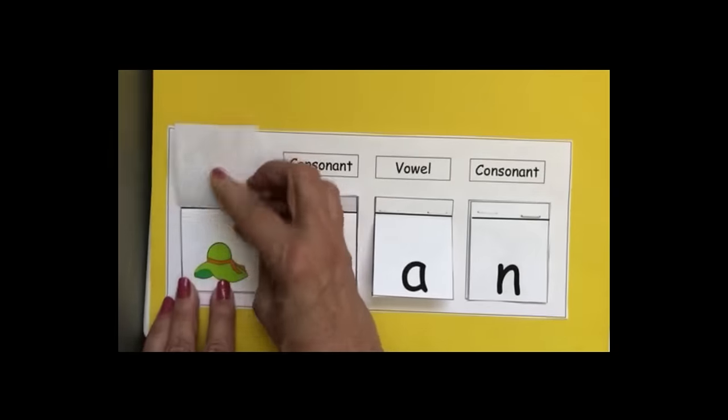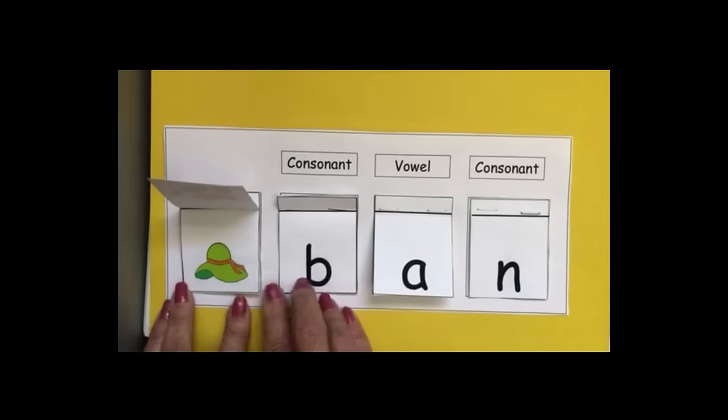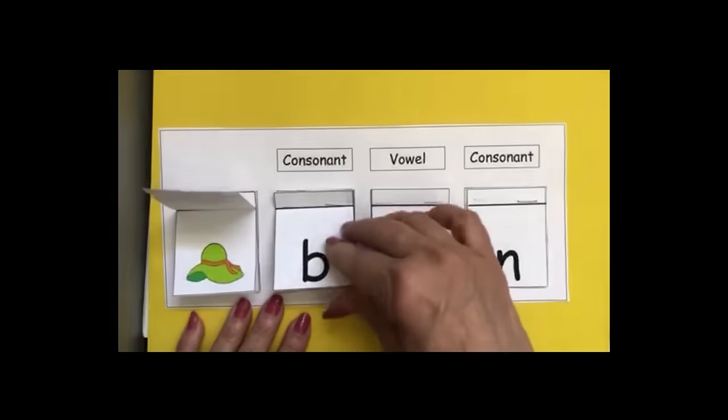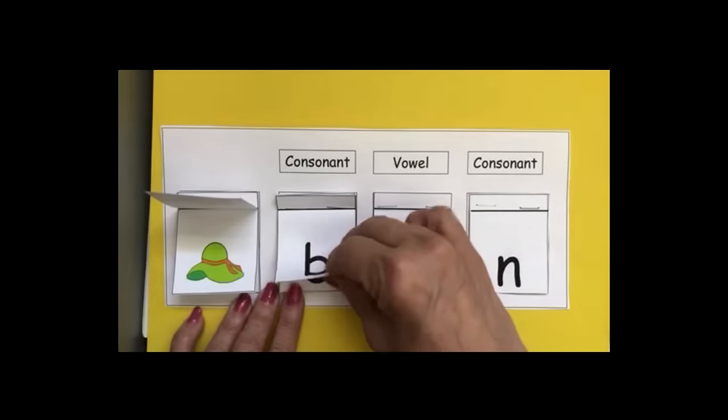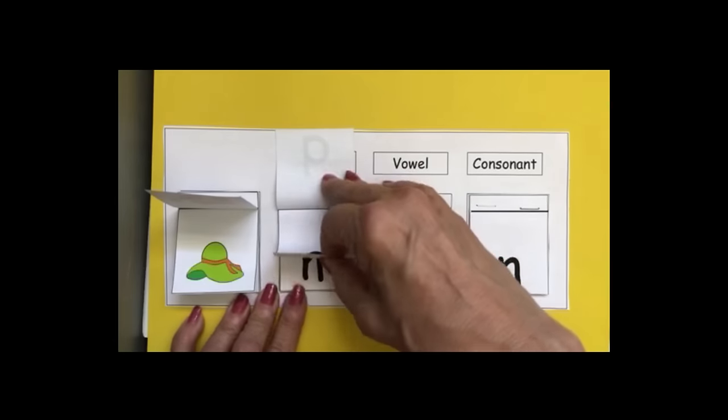So kids can go through here and pick out different words. For instance, this is hat. Then they have to find the beginning sound for h, h, hat. And these are in alphabetical order.